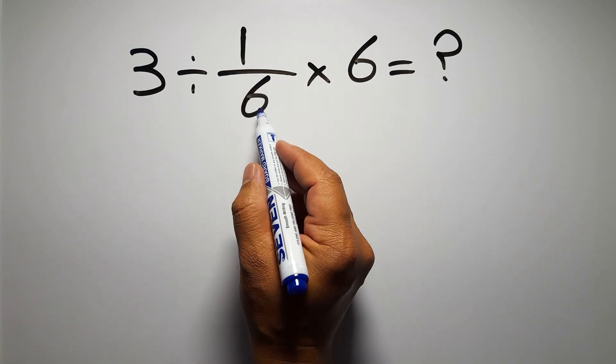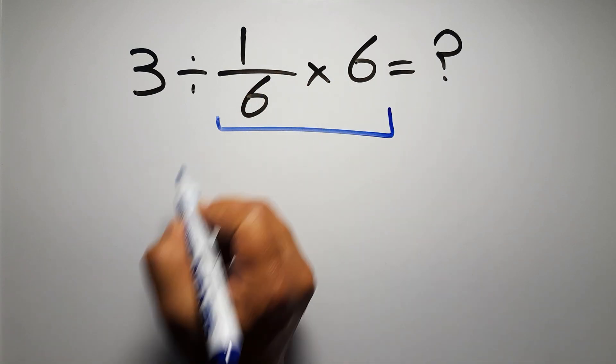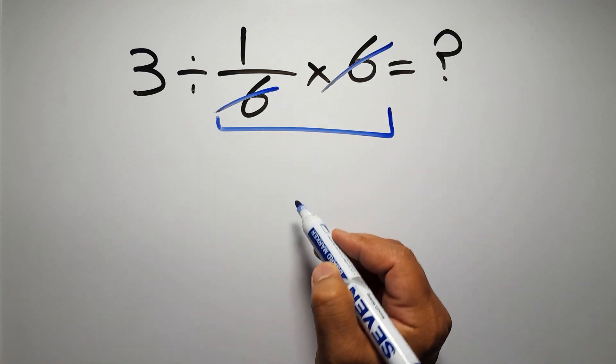First we do this multiplication: one over six times six. We can easily cancel this six and this six, so...